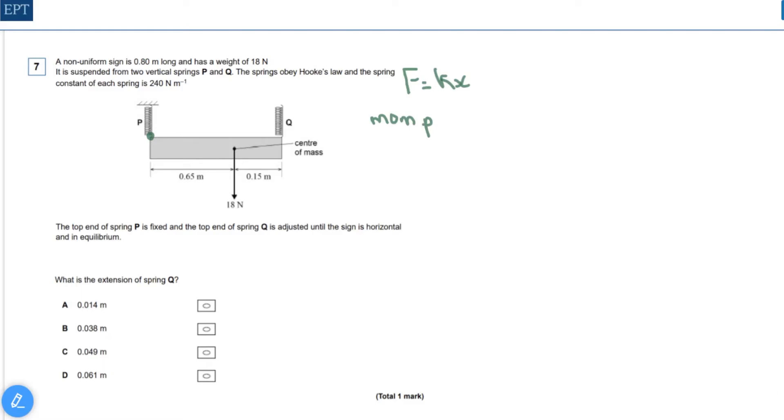The 18 newton center of mass of the sign is going to create a clockwise moment, and the force in spring q is going to create an anti-clockwise moment. Of course, they're going to be equal, so that tells us that 0.65 times 18 is going to be equal to 0.65 plus 0.25 times the force in q.